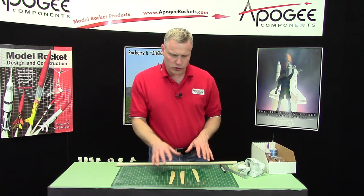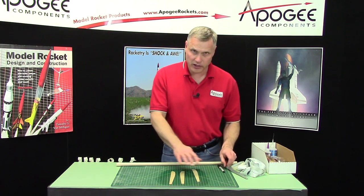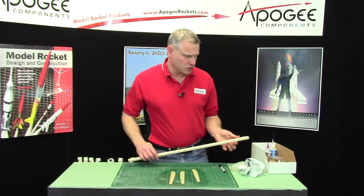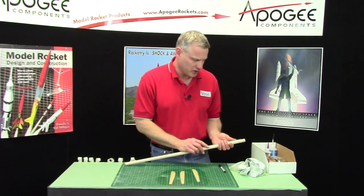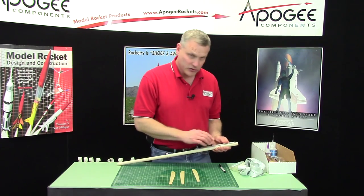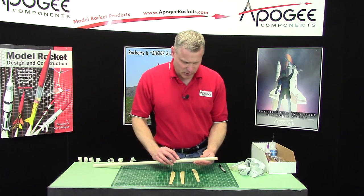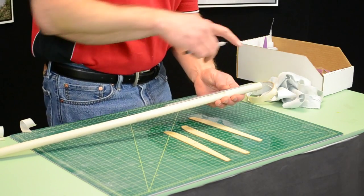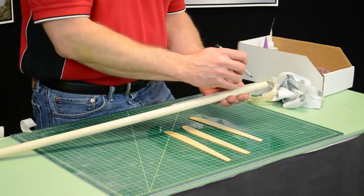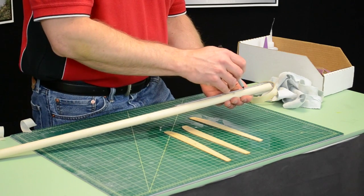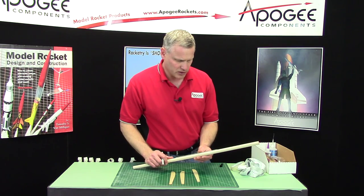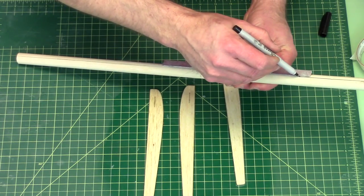While the wood is marinating in the ammonia solution I'm going to take my wood dowel and draw a line down it. This is the same way we draw lines on body tubes. Take an aluminum angle or door frame or the Estes ultimate tube marking guide and take a permanent marker and draw a straight line all the way down the dowel.